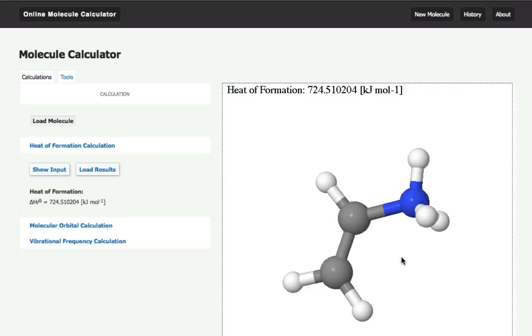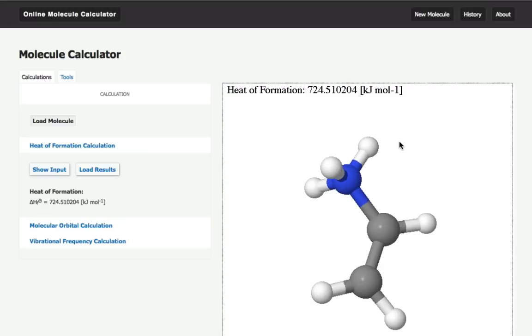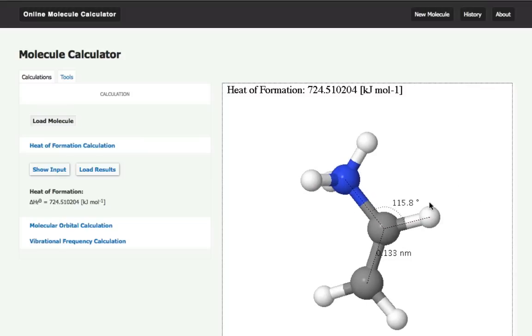I can also measure distances. The program we use to view the molecule is called JMol. JMol can do a lot of different things. For example, if I double-click on this atom and drag, I get distances, or I can get angles. I have to double-click to finish.